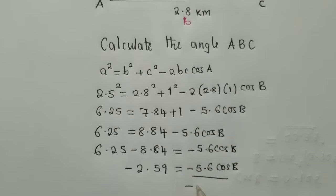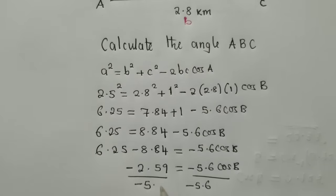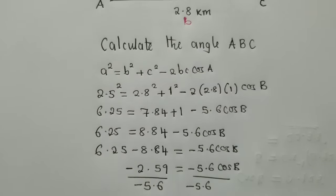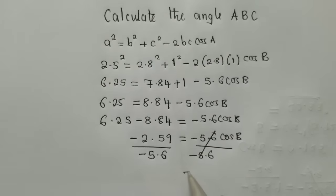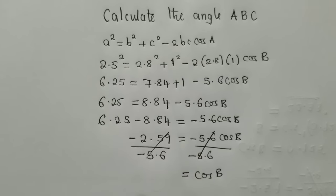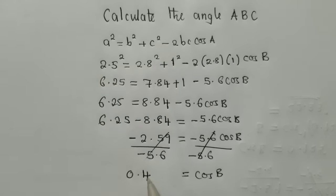We divide throughout. Remember, we are trying to find the angle. So we divide. So when we divide this side, we are going to remain with cos B. While this side, when we divide, we are going to remain with 0.4625.